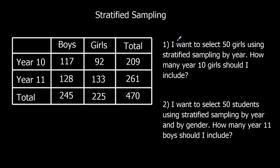Let's look at these questions. We've got a table of data showing how many boys and girls are in year 10 and year 11 — a two-way table. For question one, I want to select 50 girls using stratified sampling by year. So we're only looking at girls, sampling them by year. Year 10 girls — that's 92.